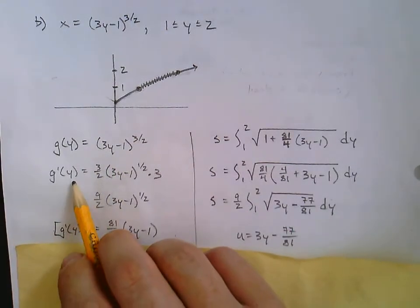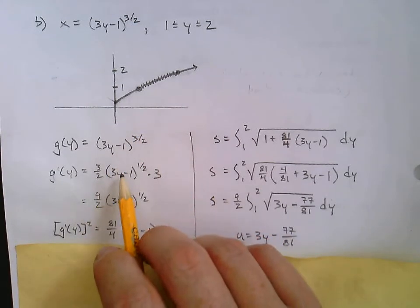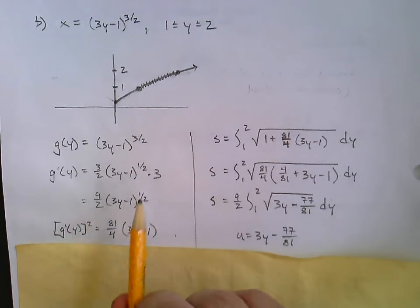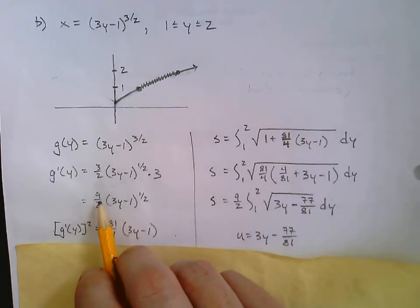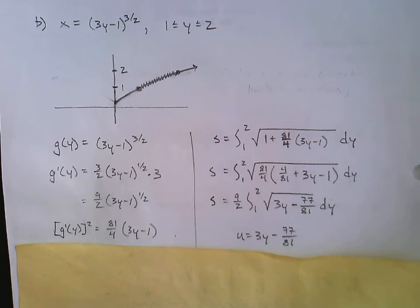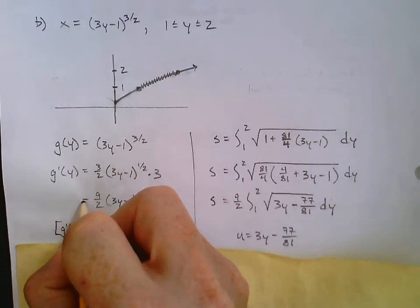So g prime of y, well, no problem, 3 over 2, 3y minus 1 to the 1 half times 3. Let's clean that up to be 9 over 2, 3y minus 1 to the 1 half. So we've got our derivative function.